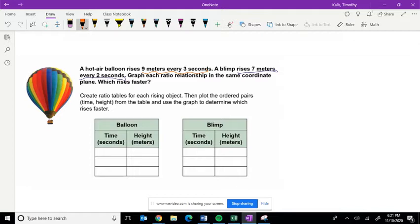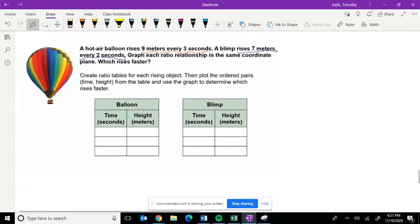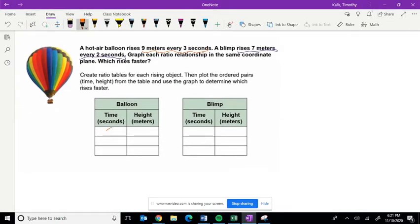So the hot air balloon first. Every 3 seconds, it rises 9 meters. So each time, we can go up in time by 3 seconds. So if we add 3, we get 6 seconds. And then obviously, we're going to then double the height. So 9 plus 9 is 18. And then after 9 seconds, we're going to add another 9 meters, and we get 27.